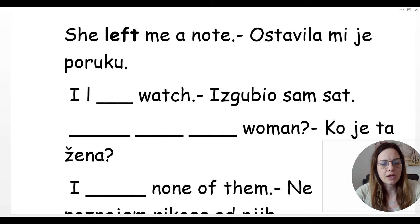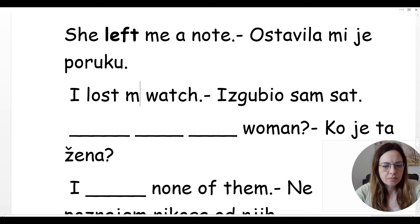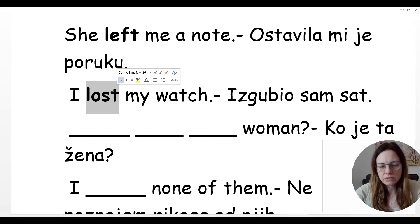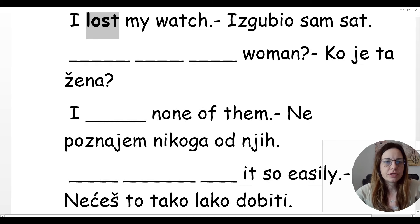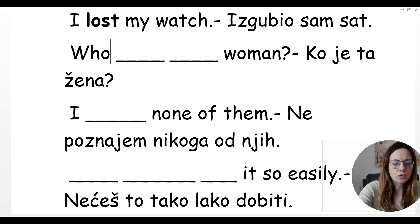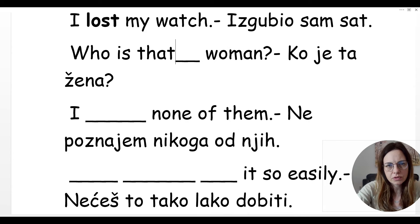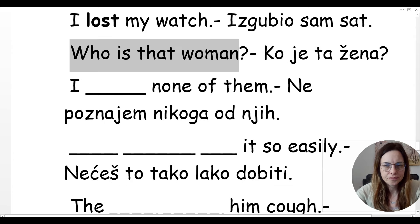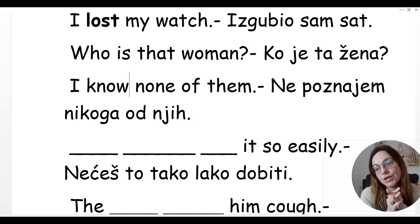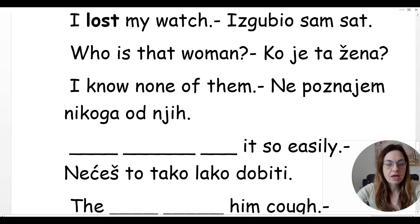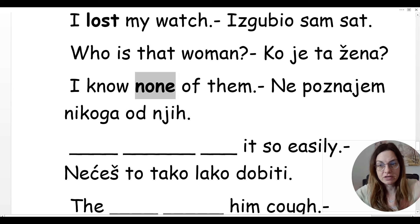Izgubio sam sat — I lost my watch. Glagol 'lose' — izgubiti, past simple: lost. Ko je ta žena? Who is that woman? Ne poznajem nikog od njih — znači idemo s glagolom u potvrdnom obliku: I know none of them. Or I don't know any of them. None je negativna reč i negira celu rečenicu — ne treba nam 'don't': I know none of them.